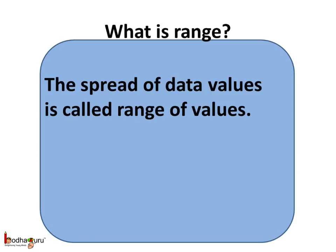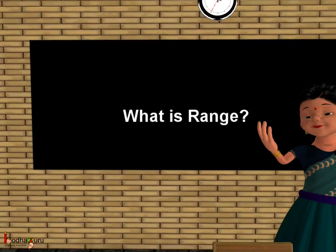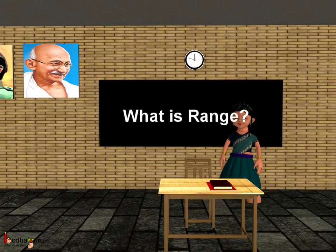So remember children, the spread of data values is called the range of values. And how do we calculate it? Range of value is equal to the highest value minus the lowest value. That's all for now. Bye-bye children.